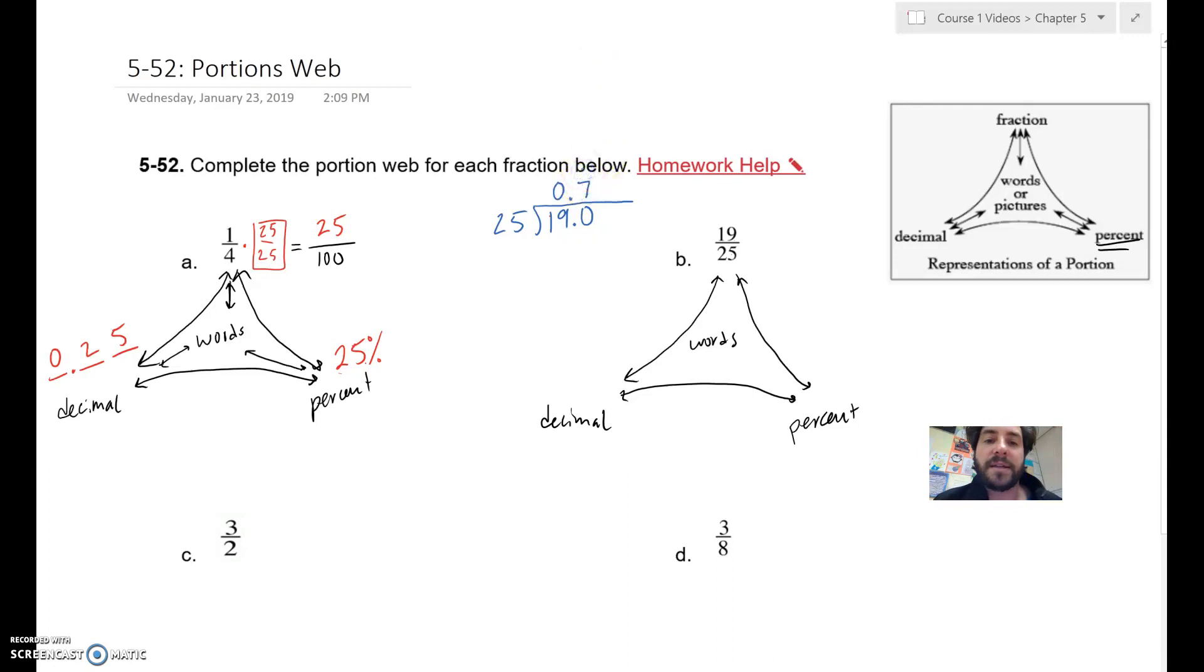Let's try 7. And 7 times 25 would be 175. Subtracting, and we get 15. And let's add another zero. We still have a remainder, so let's add a zero. And how many 25s are there in 150?